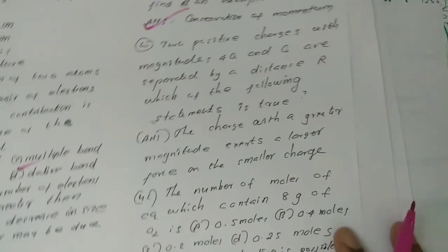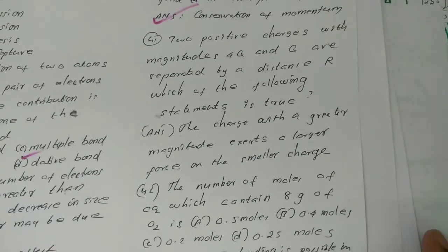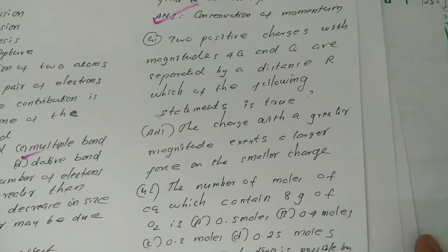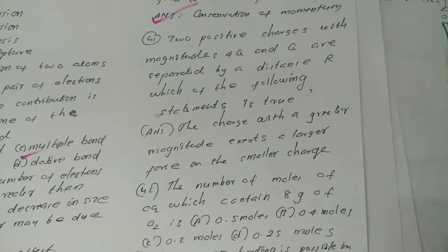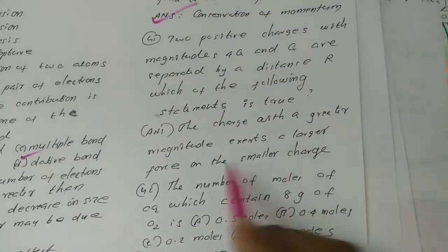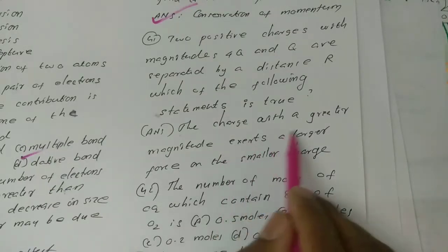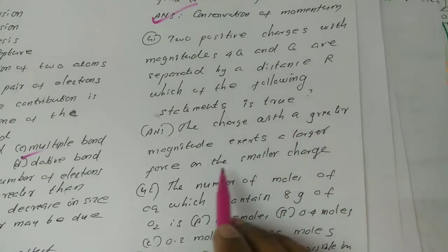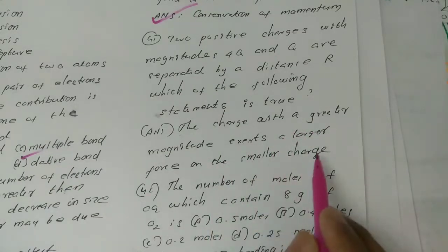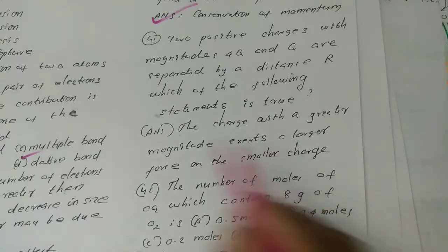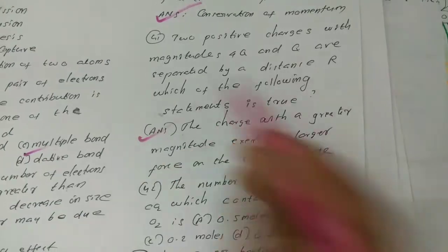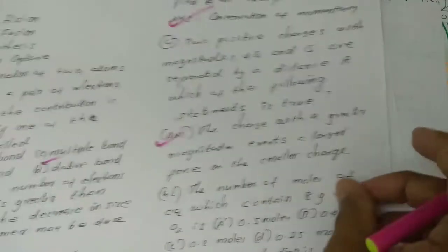Two positive charges with magnitude 4Q and Q are separated by a distance R. Which of the following statements is true? The answer is: the charge with greater magnitude exerts a larger force on the smaller charge.